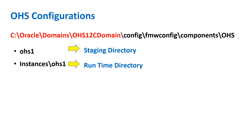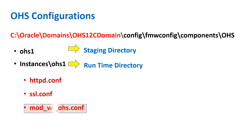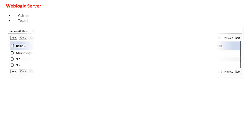There are two important configuration files for OHS. The first is httpd.conf, which is the main configuration file. The second is ssl.conf, used for SSL configuration. The third is mod_wlohs.conf, which is the main file where you define all the redirections for OHS and WebLogic integration. This mod_wlohs.conf file is called (included) inside your httpd.conf.